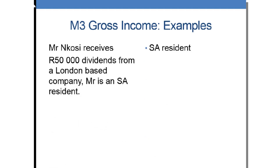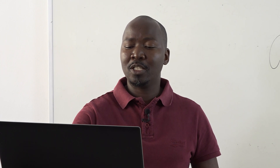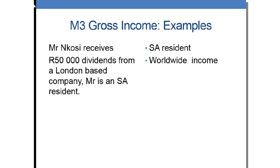Example 4: Dividends from foreign companies. If you receive dividends or rent out a hotel in a foreign country, the taxman asks: are you a South African resident? If yes, we are going to tax you in the Republic. Your reason will be South African resident — worldwide income is taxed in the Republic.